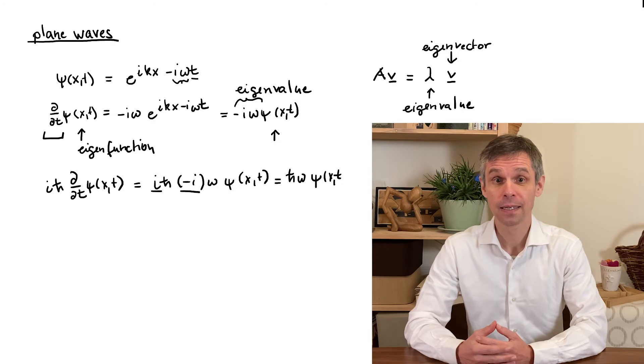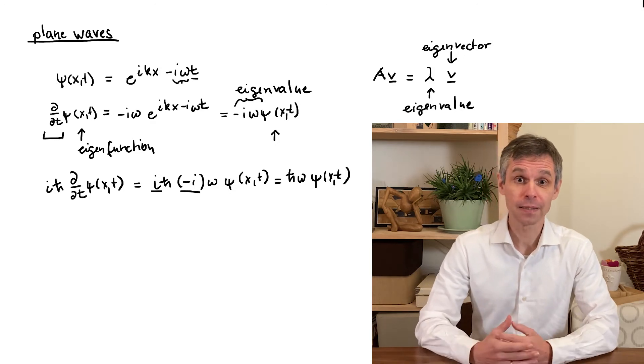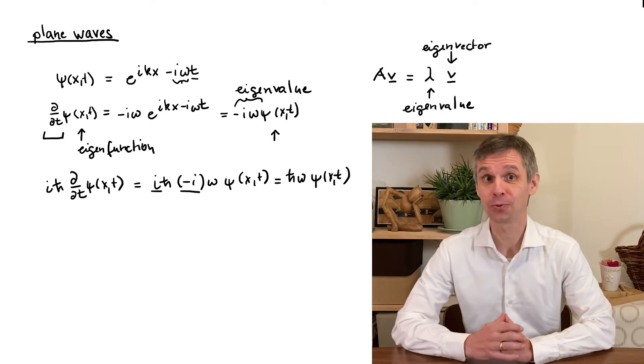Now the i will cancel with the minus i in front of the omega and so we just obtain h bar omega times psi.